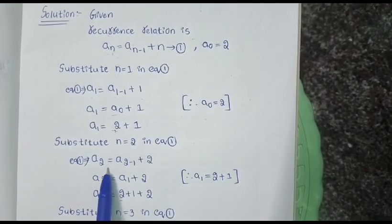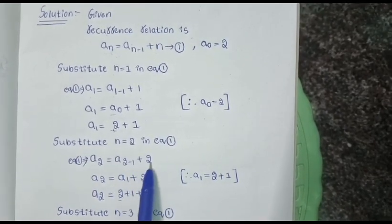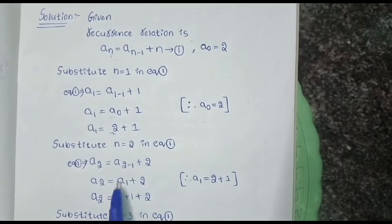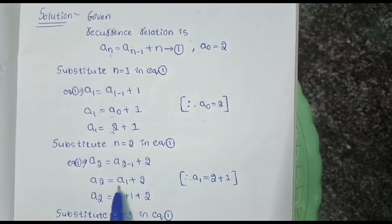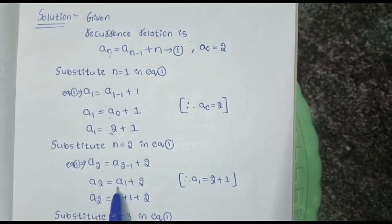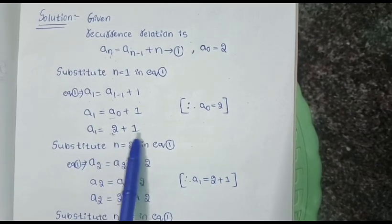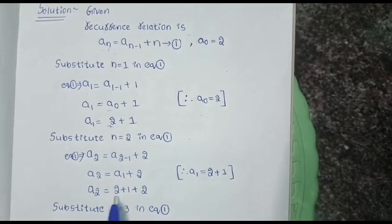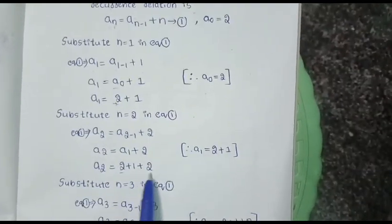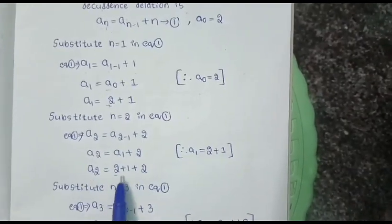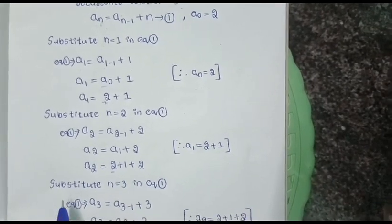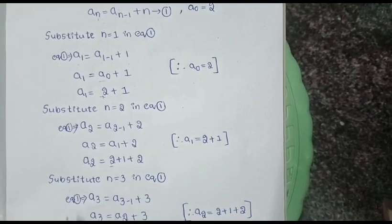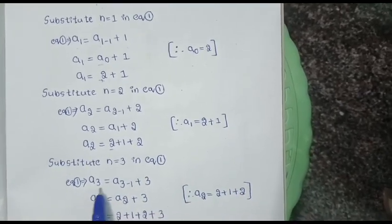Similarly, substituting n = 2 in equation 1 gives a_2 = a_{2-1} + 2, and a_{2-1} = a_1. We already calculated a_1 = 2 + 1, so substituting gives a_2 = 2 + 1 + 2. We keep it in this form without adding.